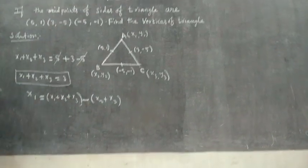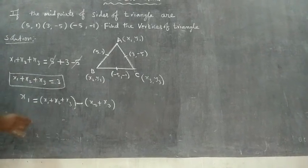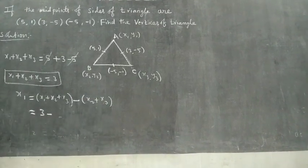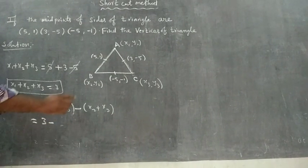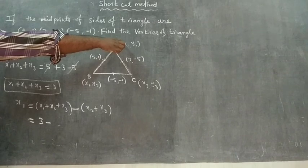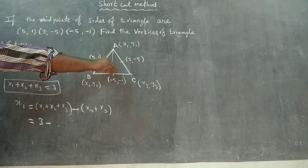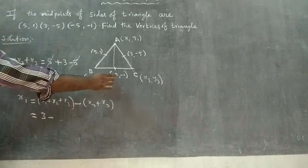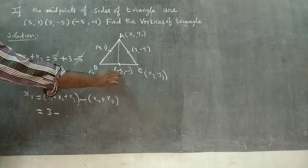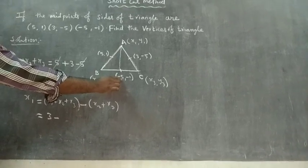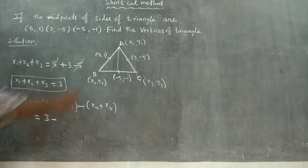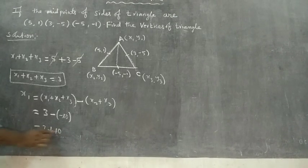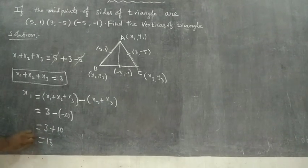Now let's use the formula. x3 comes from subtracting x2 and x3 from the total. So x1 equals the total minus (-5) minus (-5), which gives minus 10. Then minus 10 plus 3 equals minus... wait, plus 10 plus 3 equals 13. So x1 equals 13.